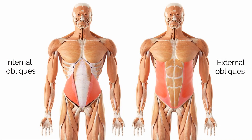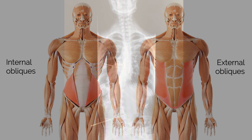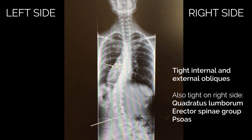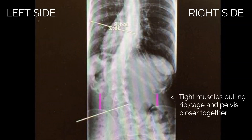Those muscles on the side of your waist are your obliques. They bend your spine to the side and also rotate your spine. So in this woman's x-ray, we can tell that her obliques on her right side are tight because of the direction and location of her curve. There are other muscles involved too, but the obliques are the strong core muscles that are pulling her ribcage and pelvis toward each other. You can see the distance between her bottom rib and the top of her pelvis is shorter on her right side because her obliques are contracted.